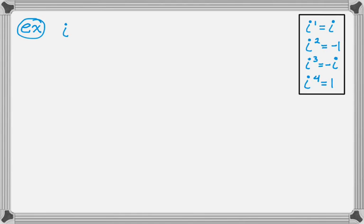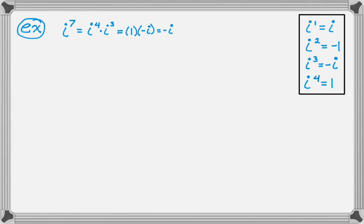Say I want to do i to the seventh power. Ideally what you do with these problems is break them into i to the fourth and then i to some other power. I look at i to the seventh and see that it is i to the fourth times i cubed. I want i to the fourth because that equals 1. So i to the fourth times i to the third: i to the fourth is 1, and i cubed is negative i. So i to the seventh works out to negative i.